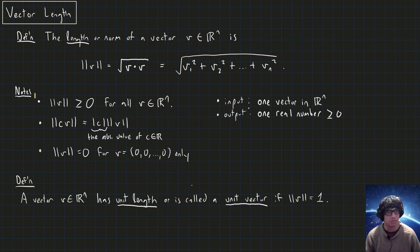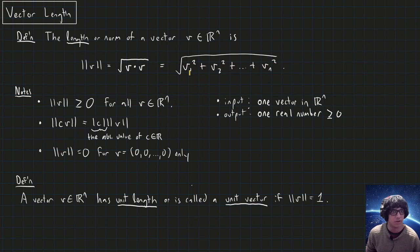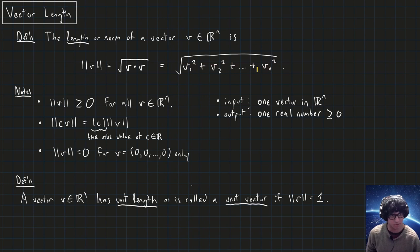Some notes about this norm: first, the norm is always greater than or equal to zero — it's non-negative. The square of any number is never negative, and the sum of non-negative numbers is non-negative, so taking the square root gives a non-negative result. This matches our intuitive sense that length shouldn't be negative.